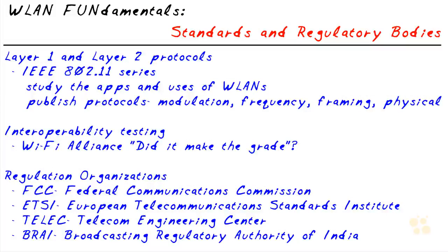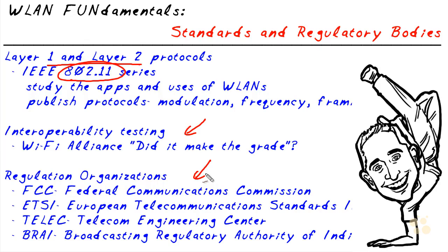In this video, we've identified that at layer one and layer two, the IEEE 802.11 group and its subsets are responsible for the protocols of wireless local area networks. They set the standards — they look at the use and possible applications, and then they make the protocols. It's up to vendors to create the products, and they get them compliance tested with the Wi-Fi Alliance. The operation of these wireless devices falls under the regulations in the country where you happen to reside. I hope this has been informative for you, and I'd like to thank you for viewing.